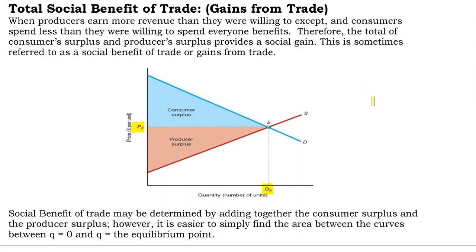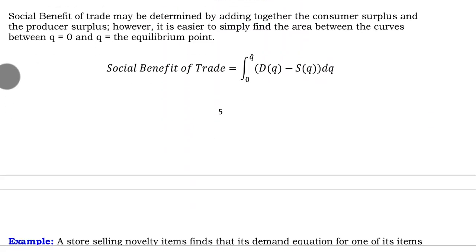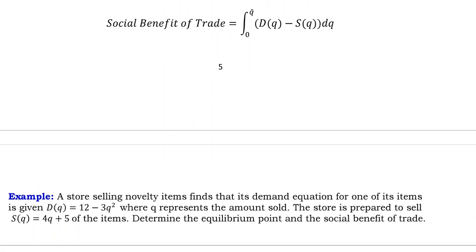Let's do an example of determining the equilibrium point and the gains from trade. First of all, the formula that we're going to use for social benefit of trade is this integral: the integral from zero to Q of the demand curve minus the supply curve.